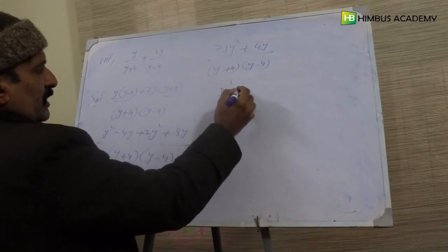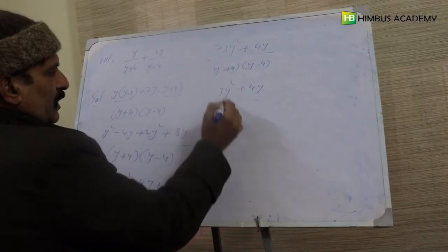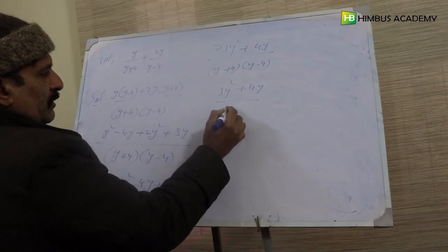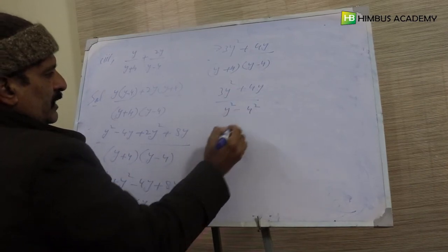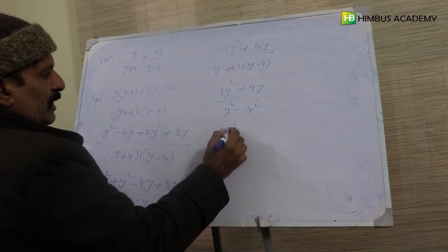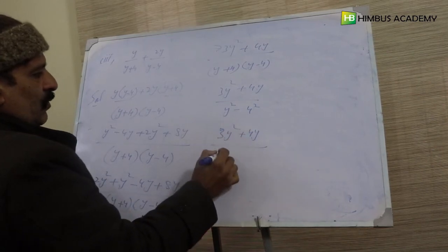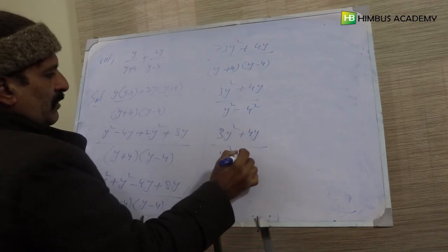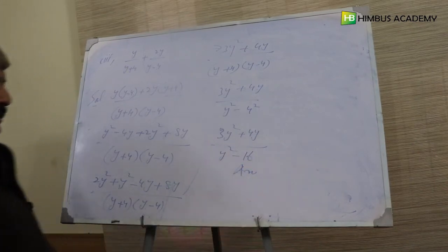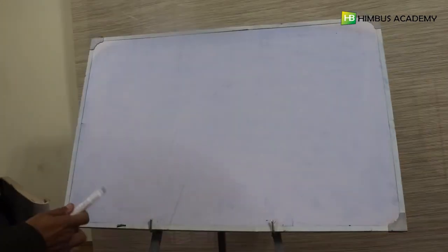Agar aage simplify karen to denominator ko a plus b into a minus b formula se likhte hain: y plus four into y minus four equals y square minus four square, yaani y square minus sixteen. To final answer hai three y square plus four y over y square minus sixteen.